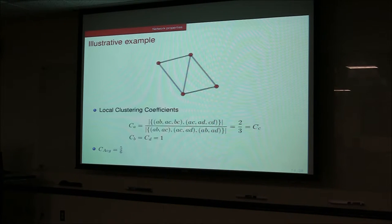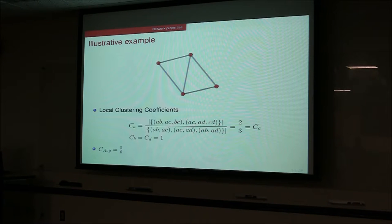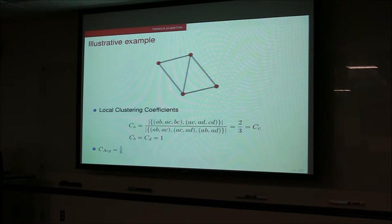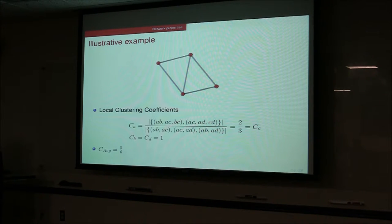For a simple graph with nodes a, b, c, d: the clustering coefficient of a — looking at closed triads b-a-c and c-a-d versus all triads including b-a-d — is 2 over 3. By symmetry, c(c) is also 2/3. For b and d, there is only one triad and it is closed, so c(b)=c(d)=1. Averaging all clustering coefficients gives an average clustering coefficient of 5/6.